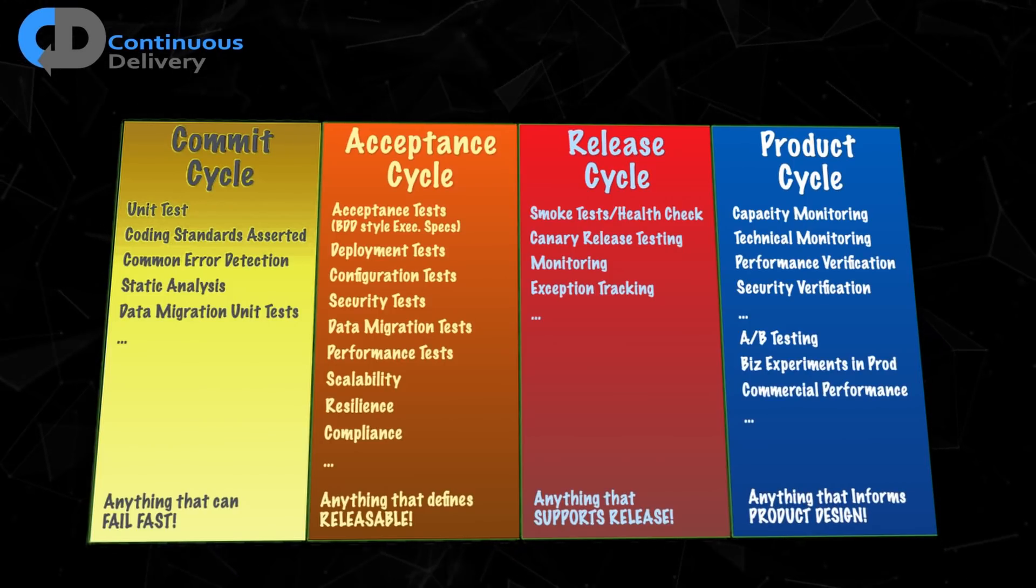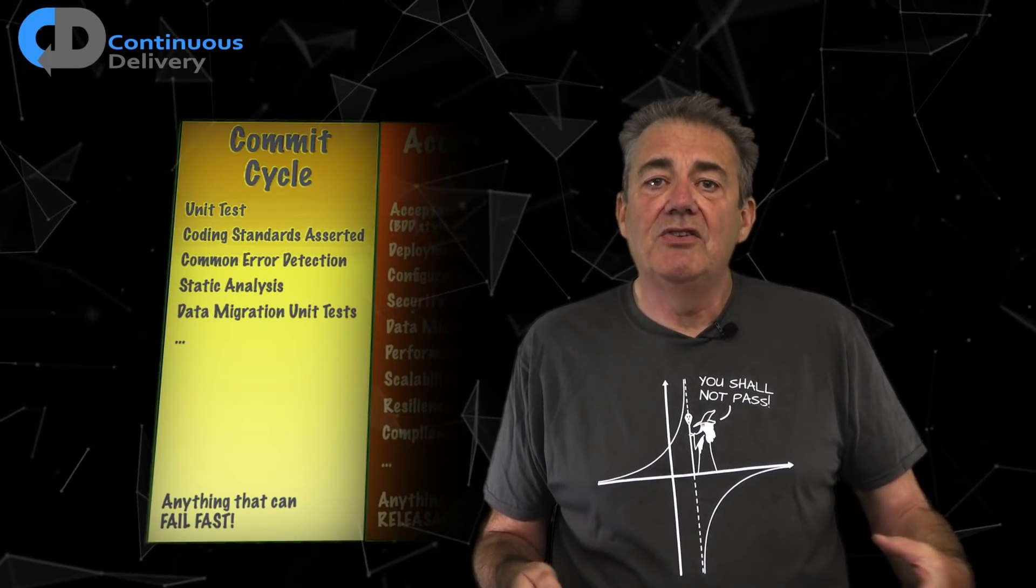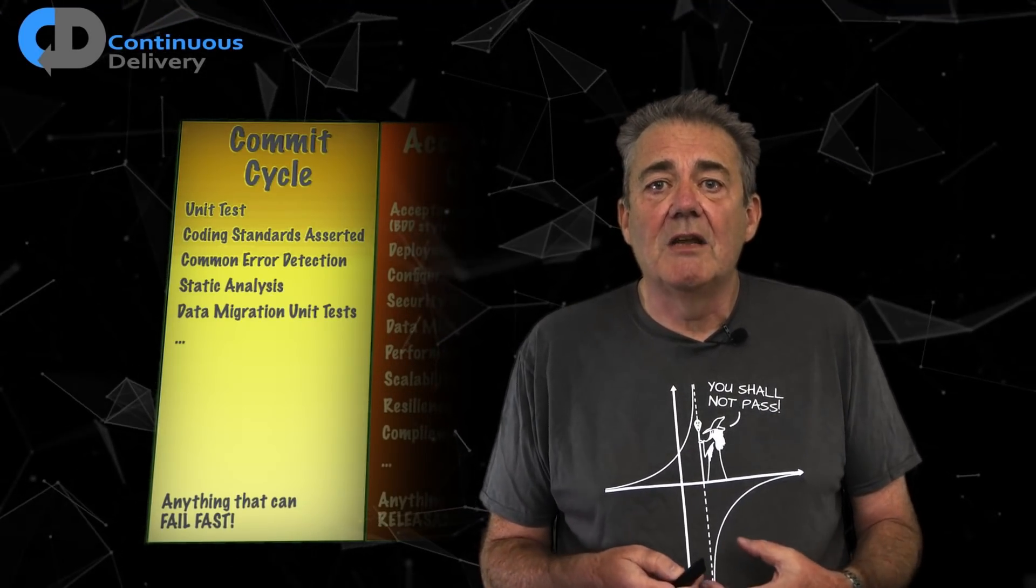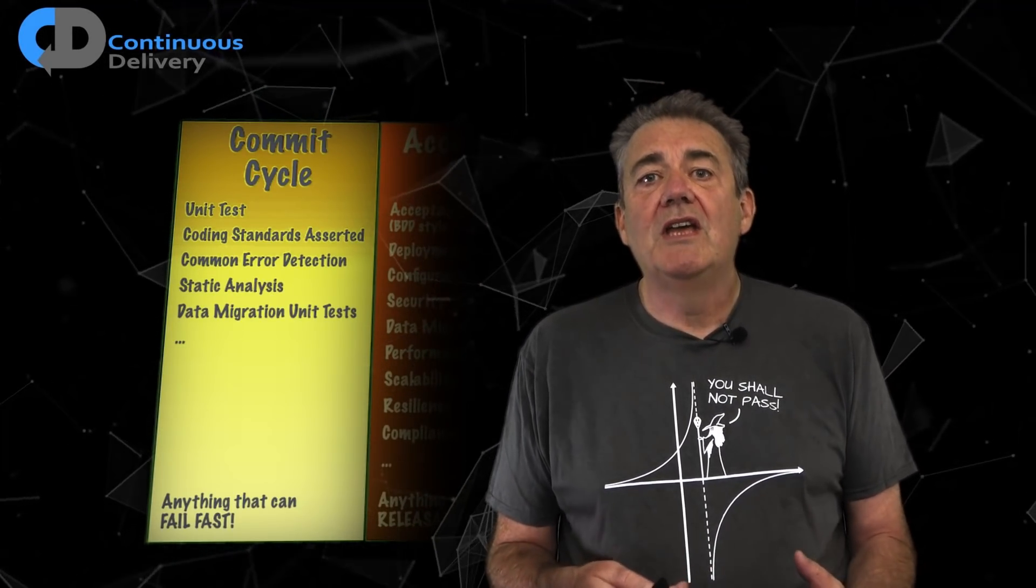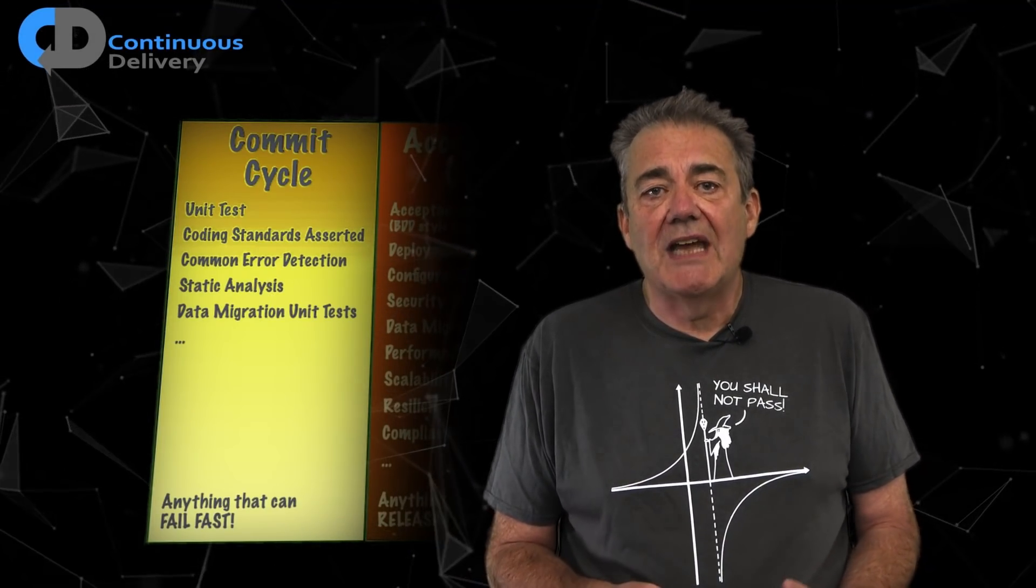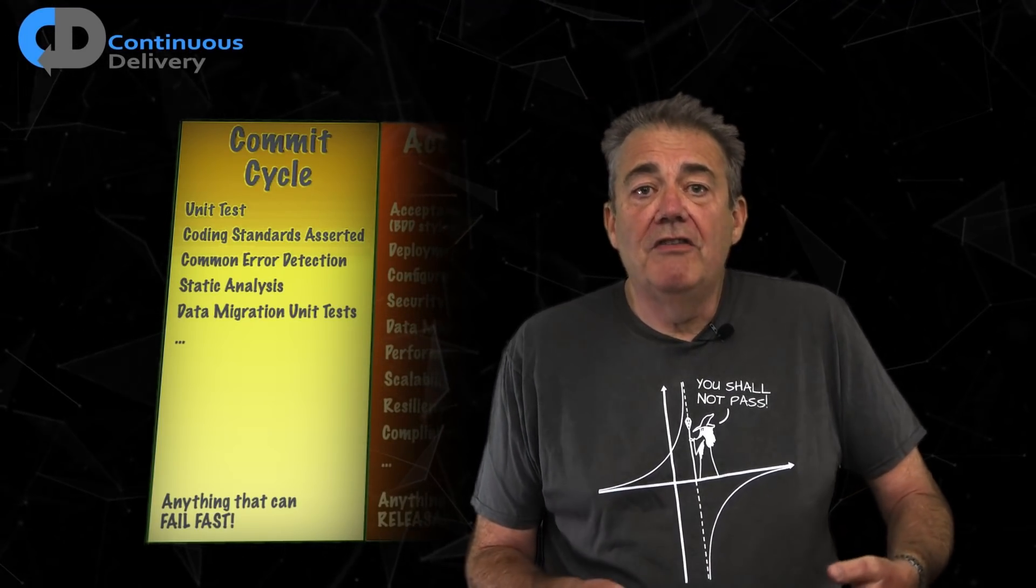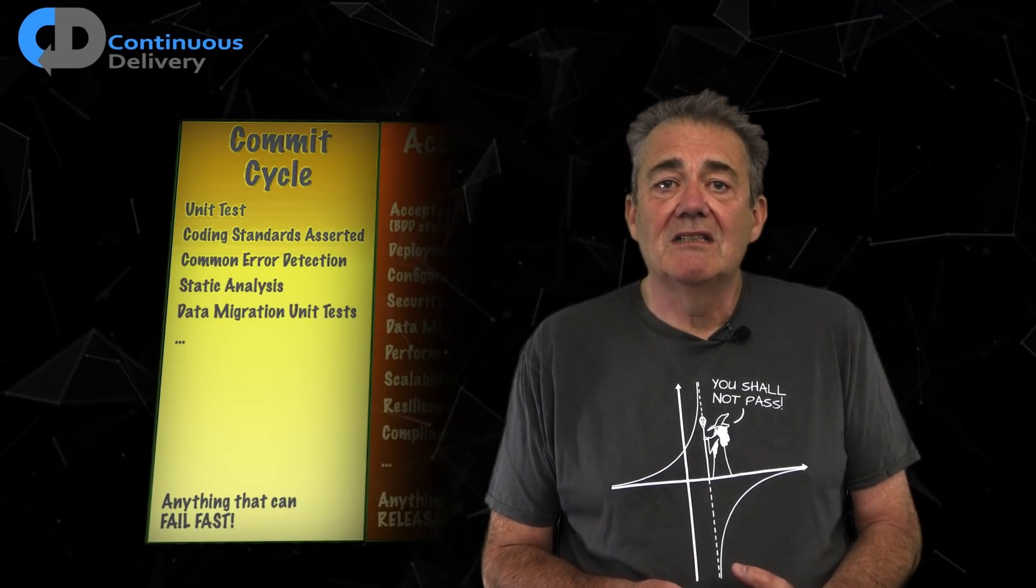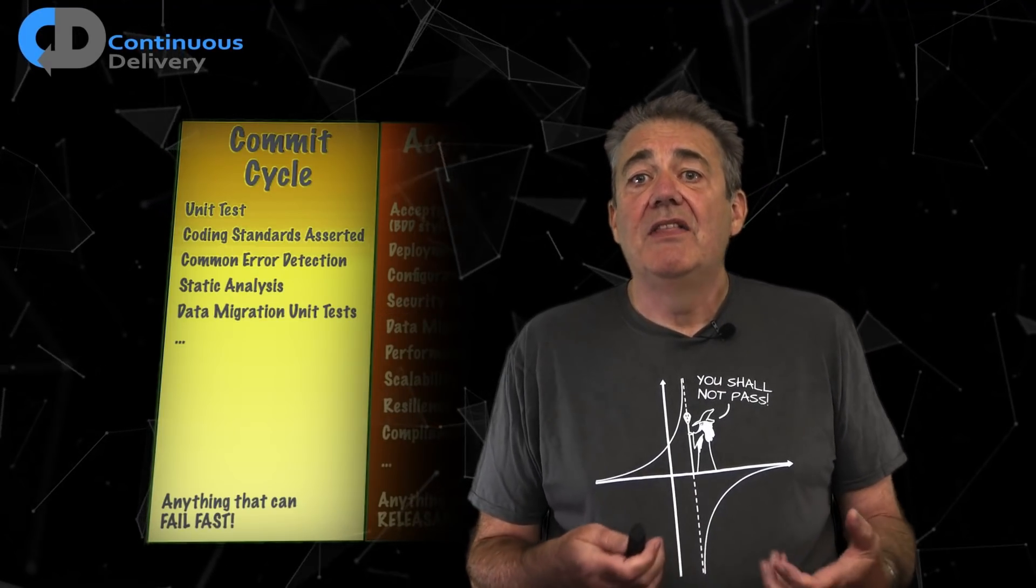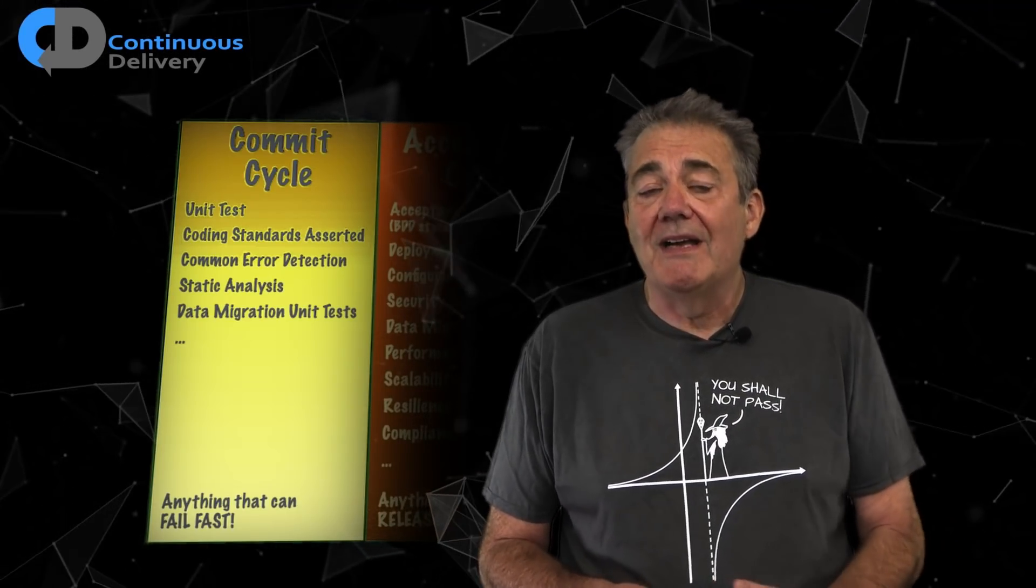We start with what I call commit stage testing. It focuses on a technical evaluation of our work. It aims to answer the question, does the code do what I as a developer think it does? We're looking for fast feedback, and we want to catch the vast majority of mistakes at this point. I generally recommend that you aim for feedback in under five minutes from your commit tests, and aim to try and achieve about an 80% level of confidence that if all of these tests pass, then all of the other tests that follow it will pass too.